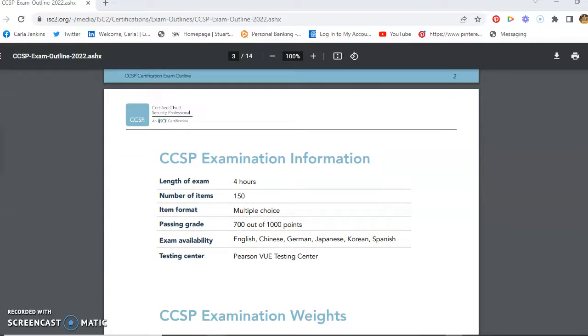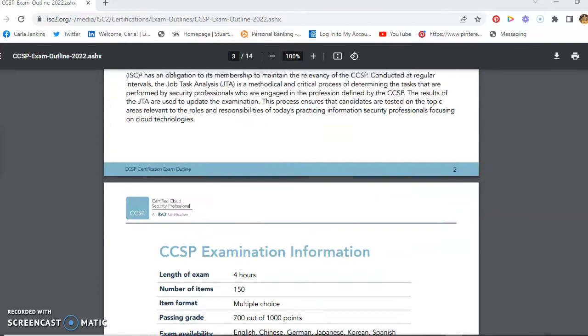Now the length of the exam is four hours. The number of items are 150. The item format is multiple choice, passing grade 700 out of 1000. These are the different languages that are available, and it's through Pearson VUE. You can do online proctoring. I'm bringing this to your attention because about two months ago on June 1st, the CISSP changed.